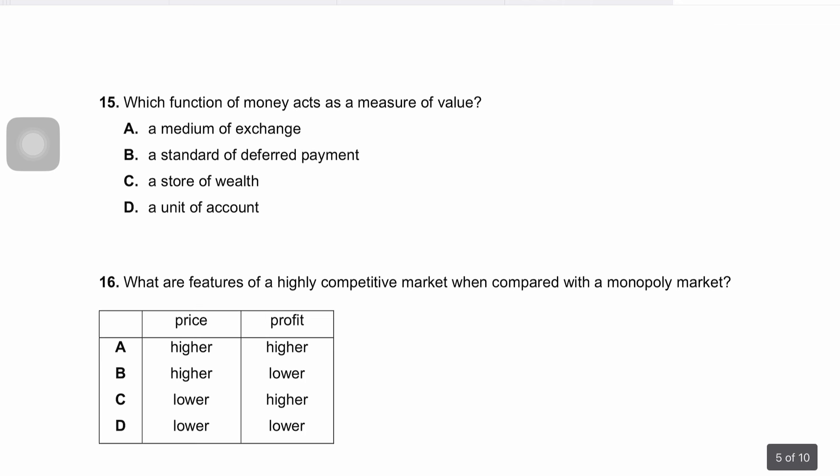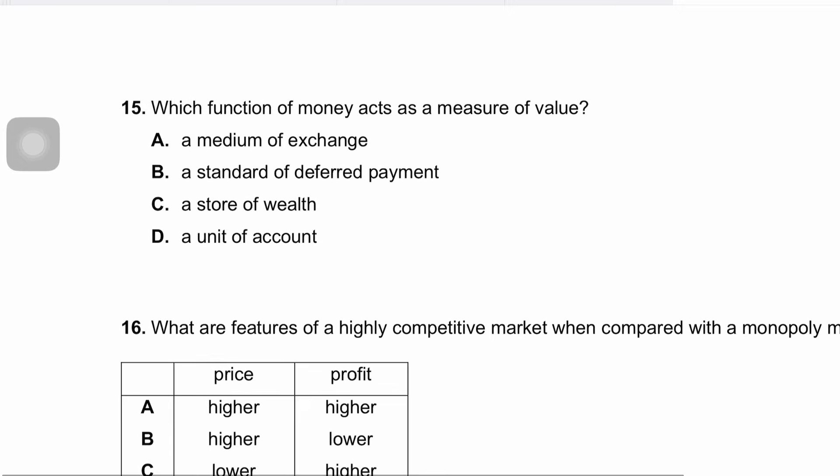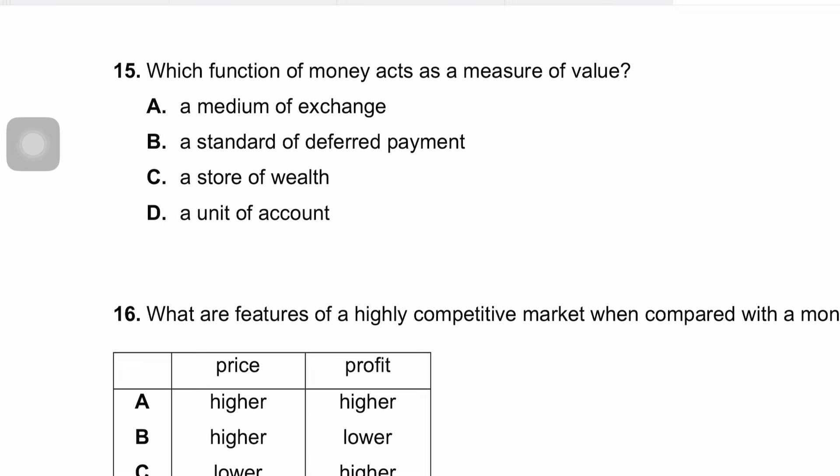Question fifteen asks which function of money acts as a measure of value. The answer is unit of account. Money as unit of account provides a consistent measure of value for goods and services, making it possible to compare the value of different items. Prices are expressed in monetary terms, enabling easy comparisons and facilitating economic decision-making and accounting. The correct answer is D.